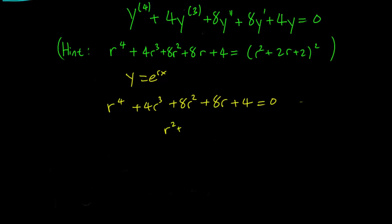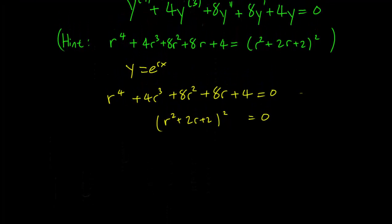We have (r² + 2r + 2)² = 0, and we can use the quadratic formula to determine the roots of the polynomial in the brackets.